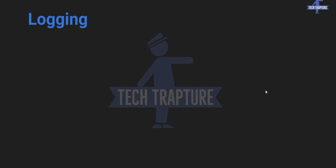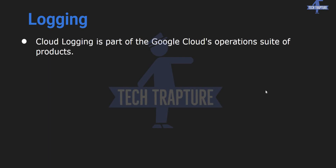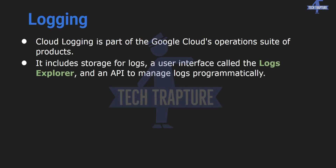First we will see what is Google Cloud Logging. Google Cloud Logging is a part of Google Cloud Operations Suite and it includes storage for logs and a user interface called the Logs Explorer. Whatever we are doing on Google Cloud is being tracked in Cloud Logging. Even if you are listing your bucket or opening your bucket, it will be tracked with your email ID. If you are deleting a VM instance, that is also tracked — which browser, which IP address, which location.